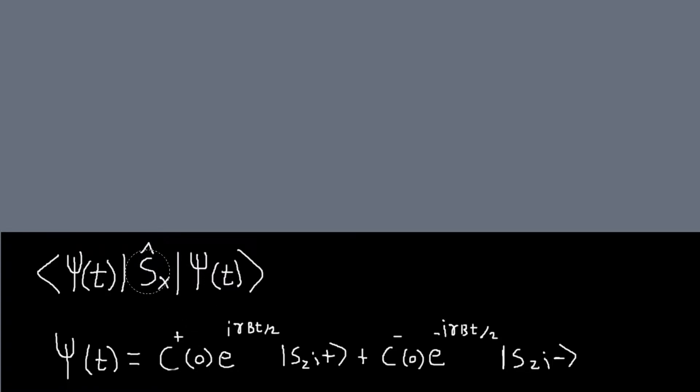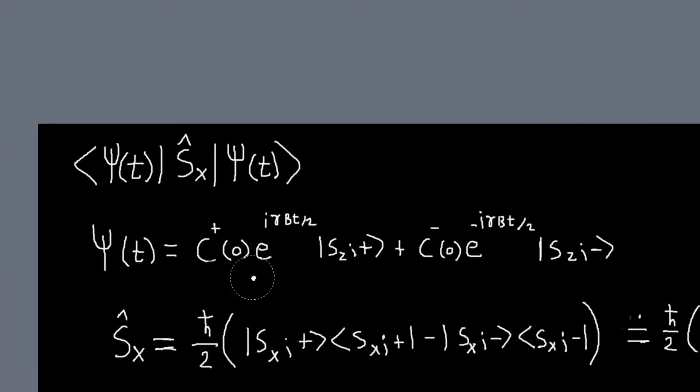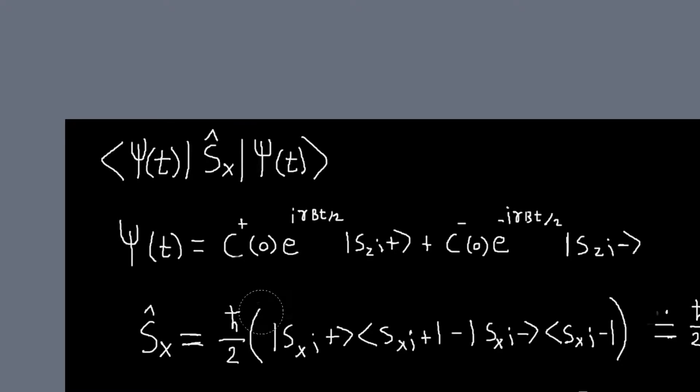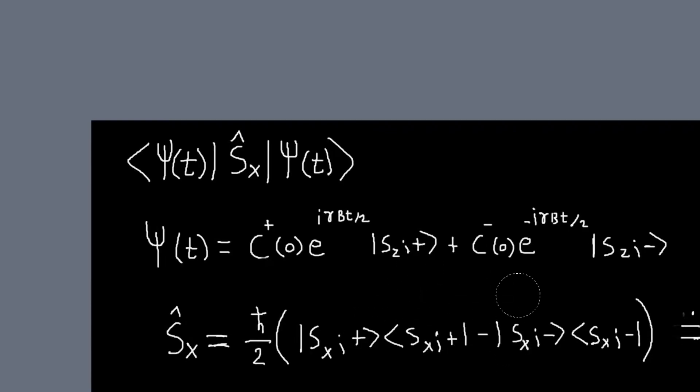So basically we know that in the Sx basis, everything that we do for the Sz operator in the Sz basis would also apply to the Sx operator in the Sx basis. So the Sx operator can be written in terms of the Sx ket outer products like this. Just like the Sz operator was written in terms of the Sz plus, Sz plus outer product minus Sz minus, Sz minus outer product times ℏ over 2, the Sx operator will be expressed in these basis outer products like this.